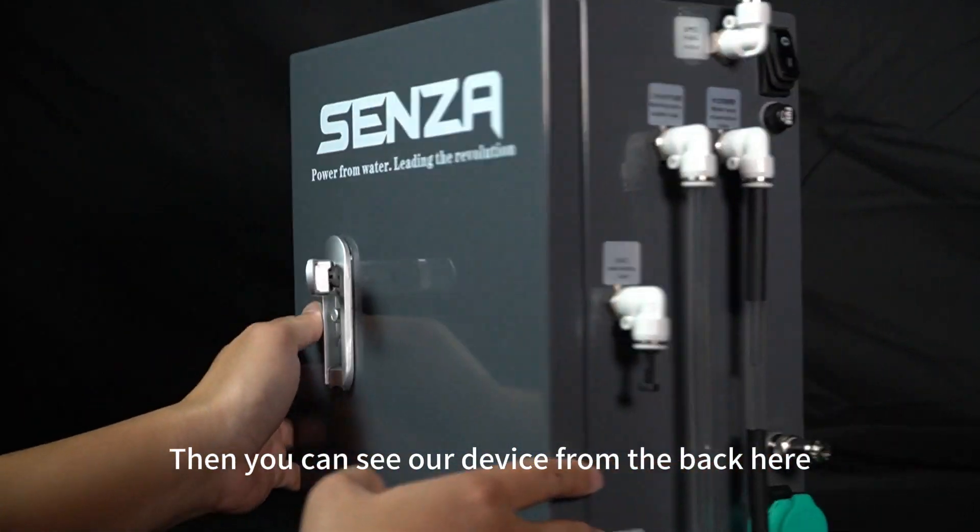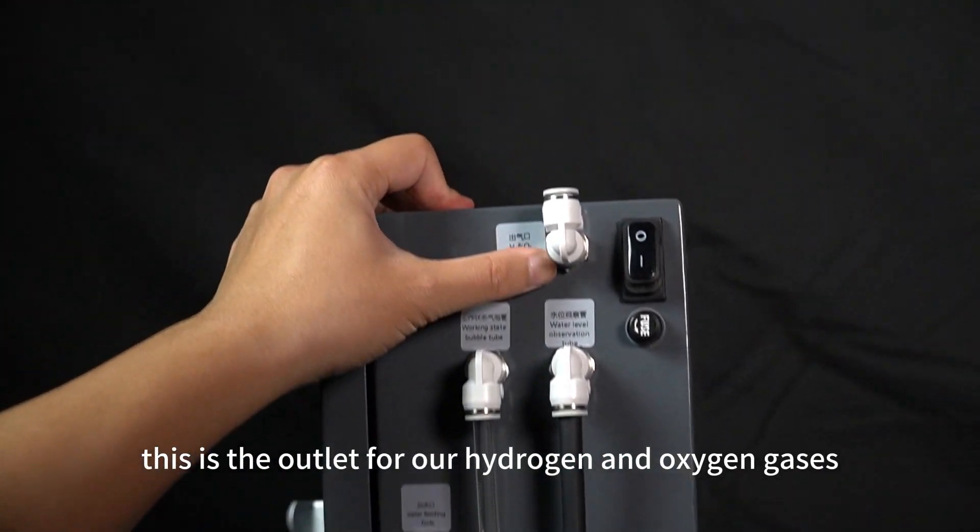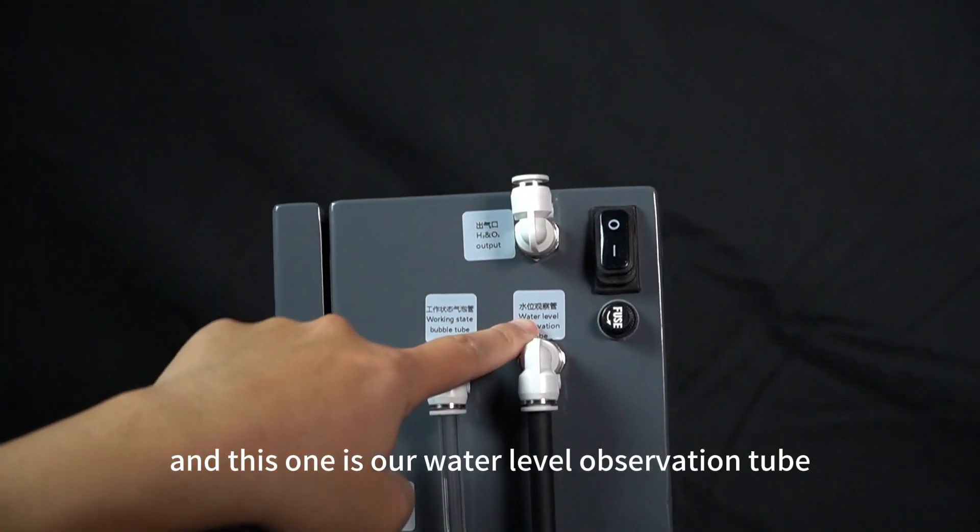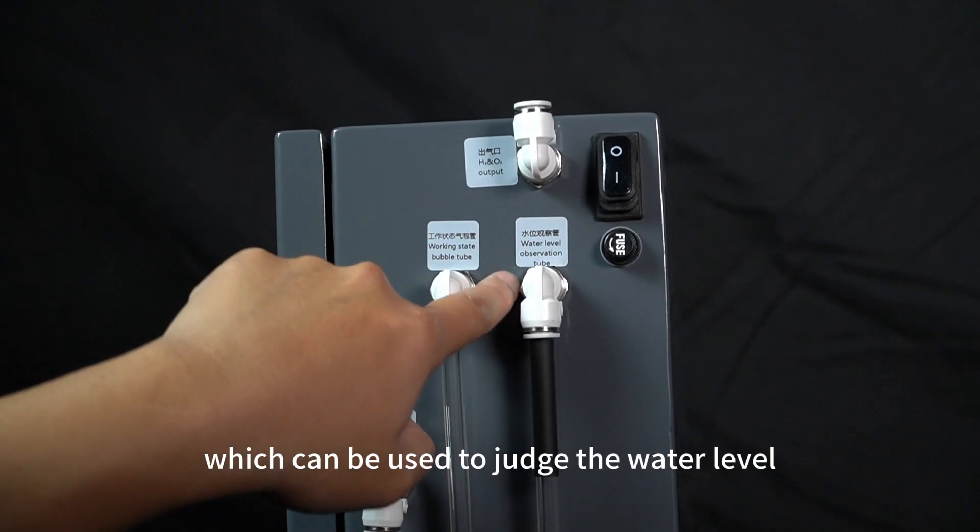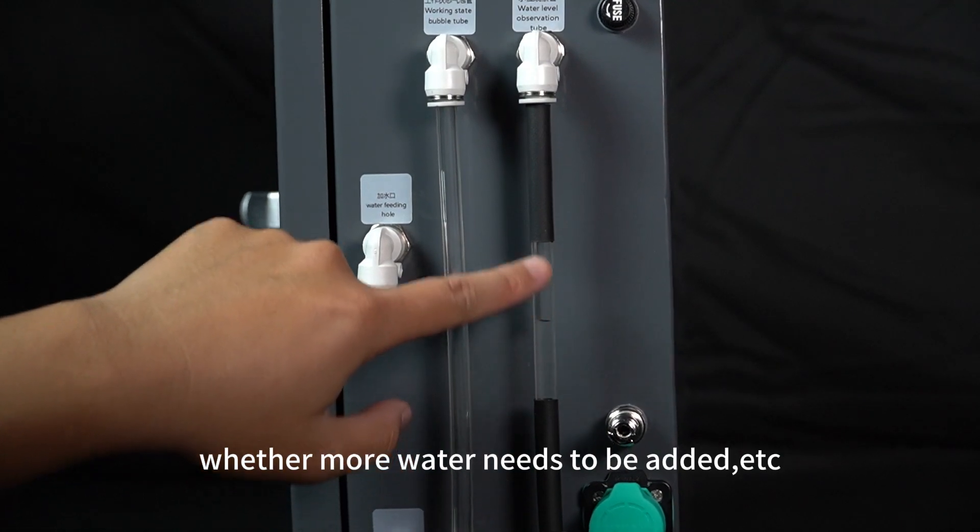You can see our device from the back here. This is the outlet for our hydrogen and oxygen gases. And this one is our water level observation tube, which can be used to judge the water level and whether more water needs to be added.